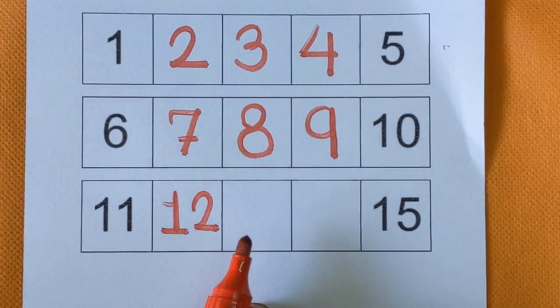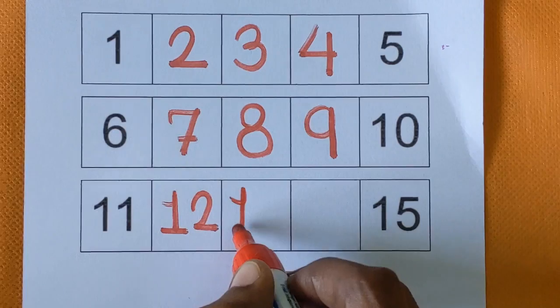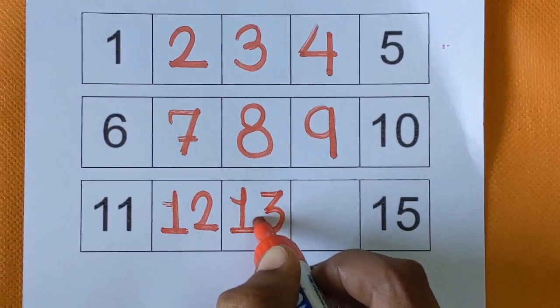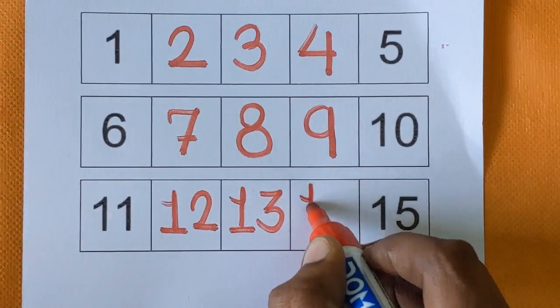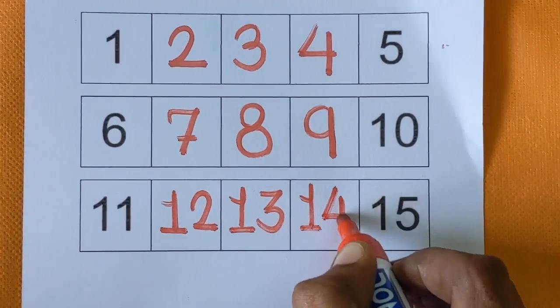After number 12, what is missing here? It's a number 13. 1, 3, 13. Next is number 14. 1, 4, 14.